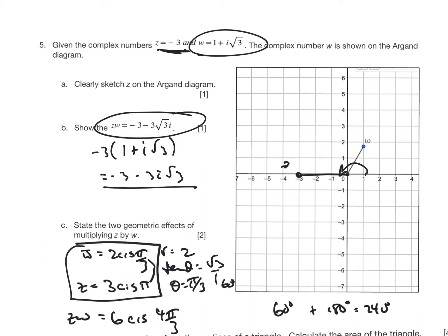And so what are the two geometric effects of multiplying z by w? Well, I'm multiplying z, so it's going to be a scale enlargement by a scale factor of 2, and it's going to be rotated counterclockwise by pi by 3.